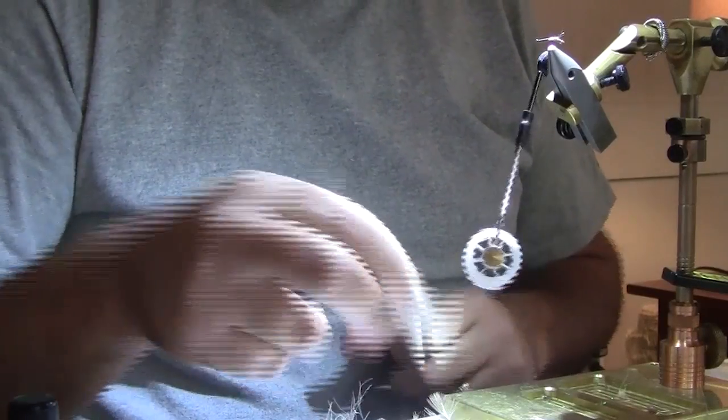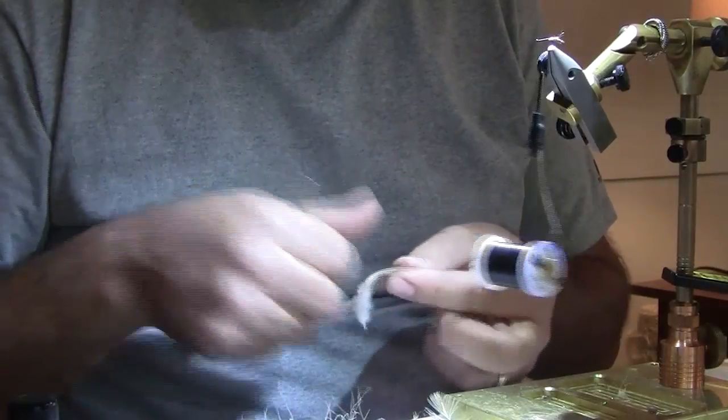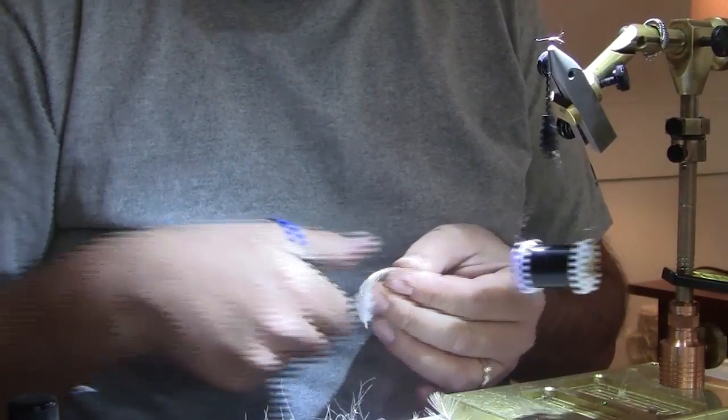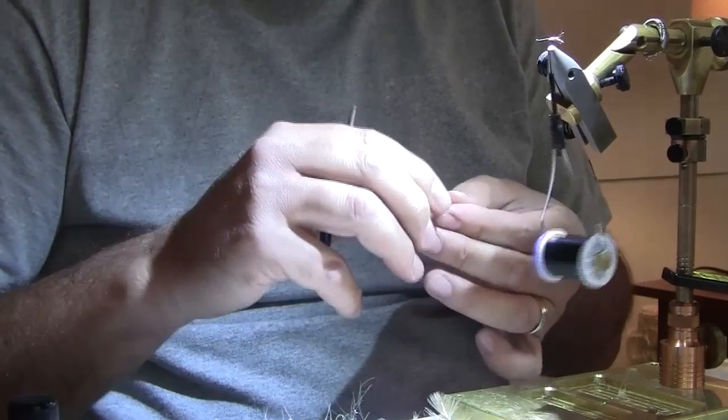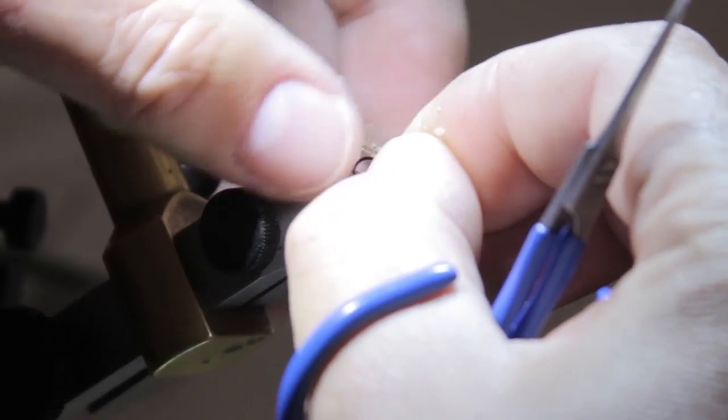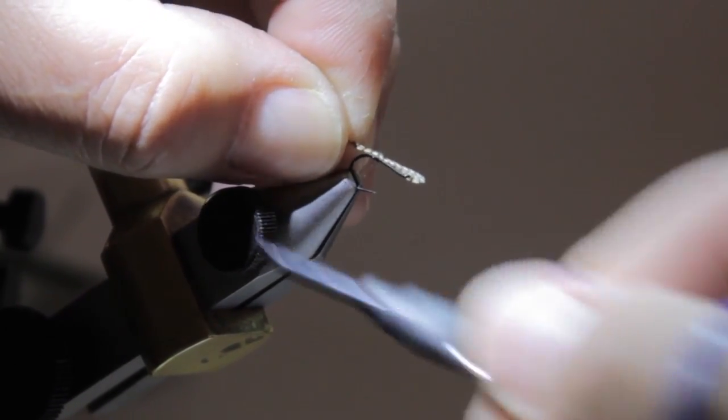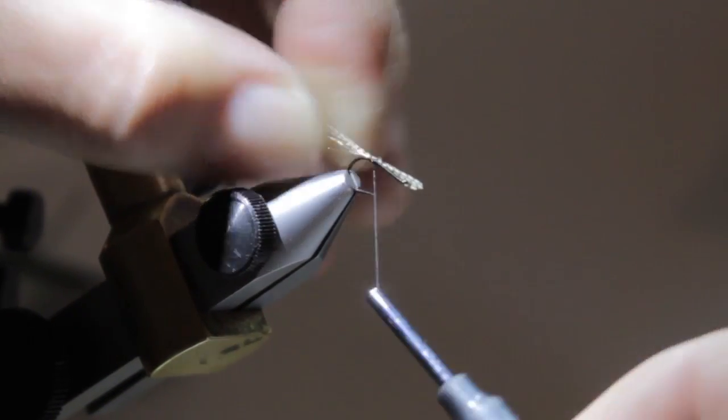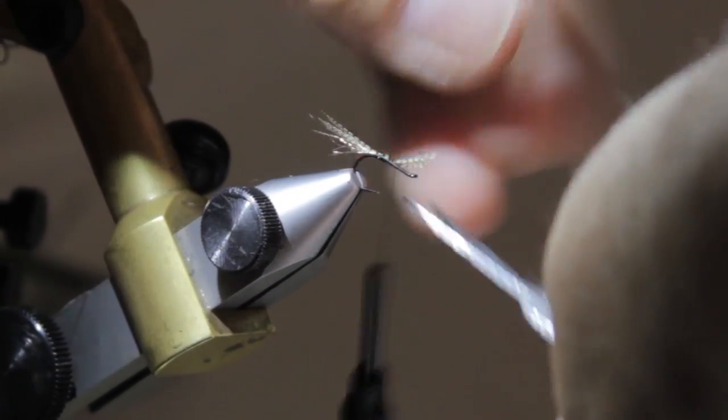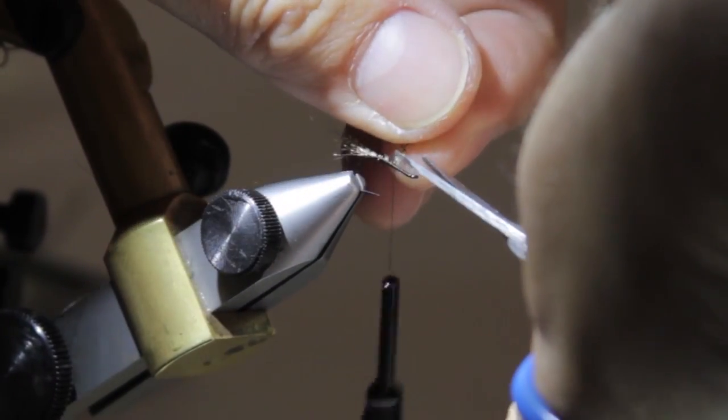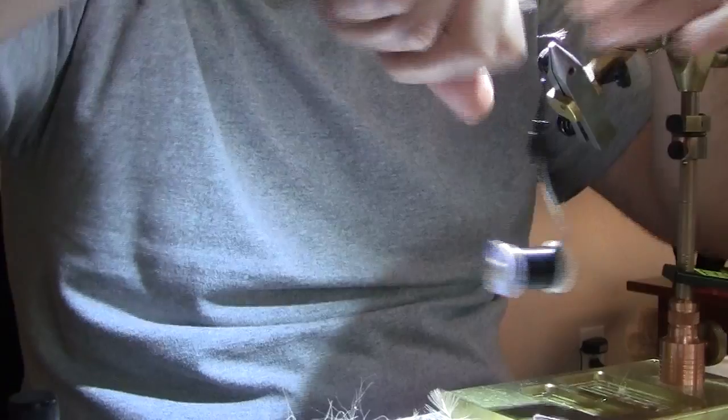Now we need some wood duck for our tail. Lay that in. You can do the wood duck first. I think I normally do it that way. We have our tail in.